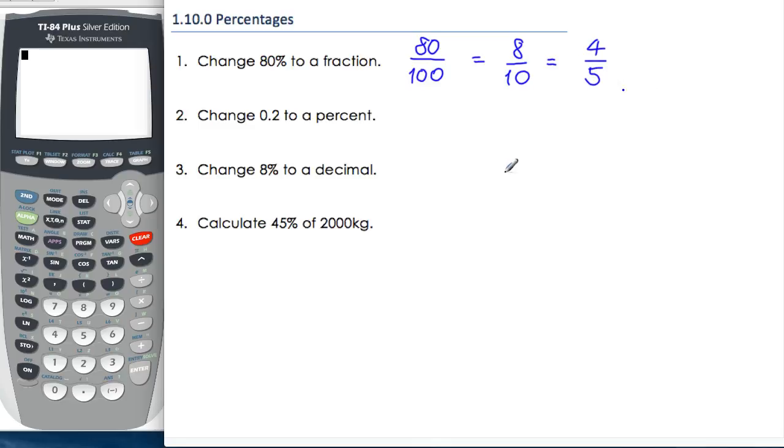Nice easy one to warm up on. Next, we will change a decimal, 0.2, two tenths, to a percent. And to move from a decimal to a percentage, some people simply multiply by 100 and have the percent symbol, and then you end up with 20.